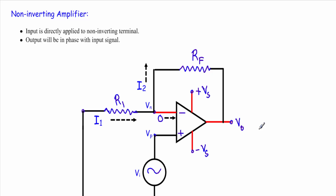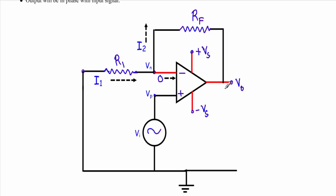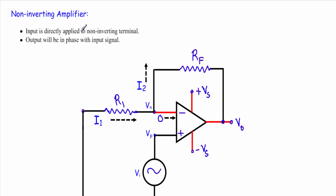Now I will show you another linear application of the operational amplifier — the non-inverting amplifier. This amplifier also uses negative feedback. Looking at the circuit arrangement of the non-inverting amplifier, the output is directly connected to the inverting input terminal, making it a negative feedback configuration. It is called non-inverting because the input voltage is applied to the non-inverting terminal, and the output will be in phase with the input voltage — the output shape is the same as the input.